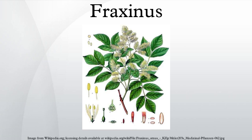Selected species from Eastern North America include: Fraxinus americana — white ash; Fraxinus caroliniana — Carolina ash; Fraxinus nigra — black ash; Fraxinus pennsylvanica — green ash; Fraxinus profunda — pumpkin ash; Fraxinus quadrangulata — blue ash.